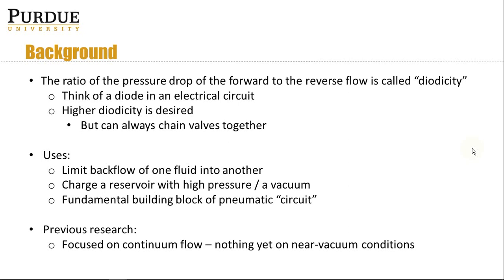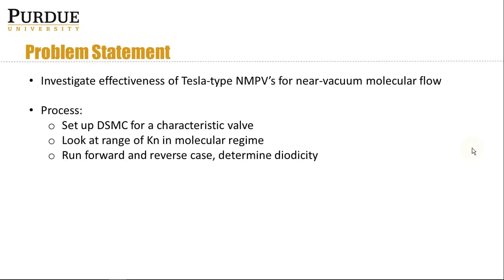Previous research has focused on continuum flow, with nothing yet on near-vacuum conditions. So I'm going to investigate the effectiveness of these non-moving parts valves for near-vacuum molecular flow. The basic idea is to set up DSMC for a characteristic valve, look at a range of Knudsen numbers, and run the forward and reverse cases to determine diodicity from the ratio of the pressure drops.